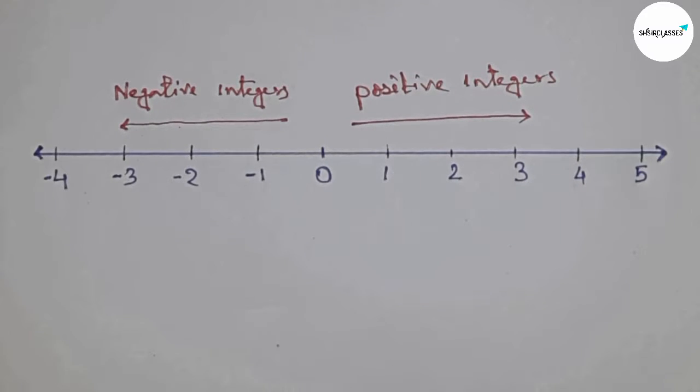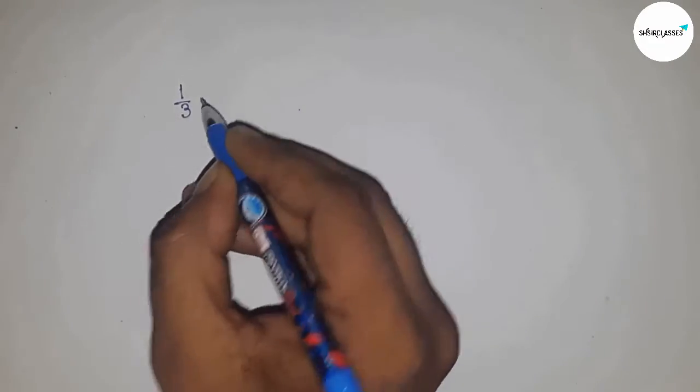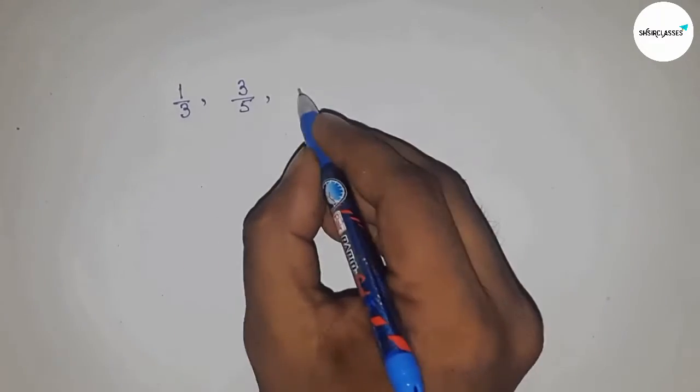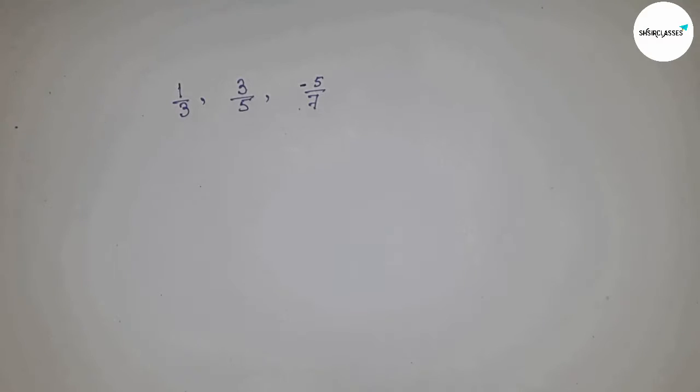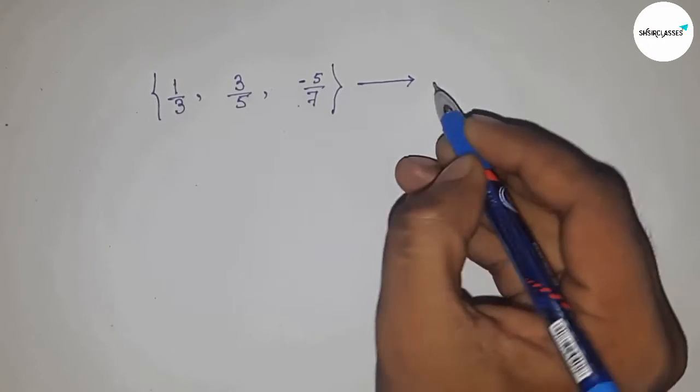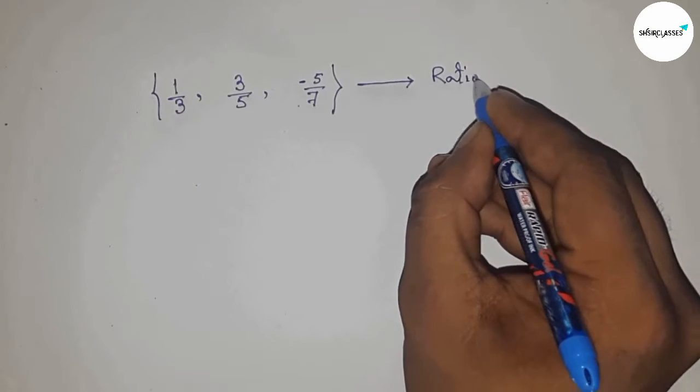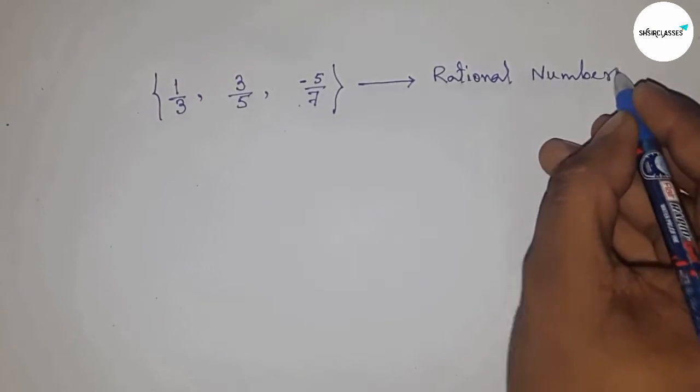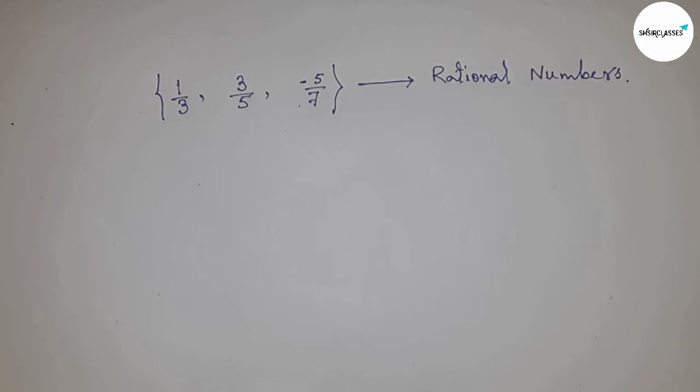We are familiar with this type of numbers. Now what about this type of number: 1 by 3, 3 by 5, and minus 5 by 7? This type of numbers are called rational numbers. But we cannot always say so; there should be a standard form.